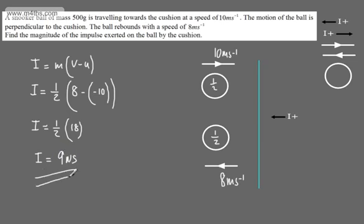The impulse exerted by the cushion on the ball has the same magnitude as the impulse exerted on the cushion by the ball — they are equal and opposite. You can work these problems by flipping the perspective; it will just have a negative sign. I prefer the sketch, but if you want to use the formula purely, just be very careful. This gives us a good picture of what's going on.